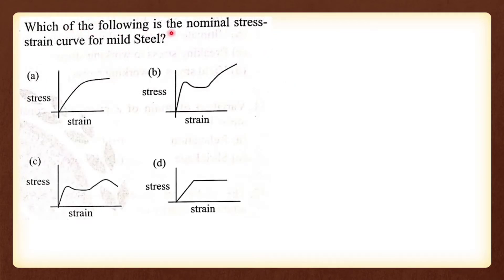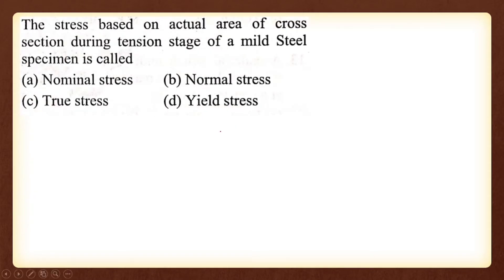Which of the following is the nominal stress-strain curve for mild steel? The mild steel curve — option C is the correct answer, showing: proportionality limit, elastic limit, upper yield point, lower yield point, ultimate stress, and breaking point.